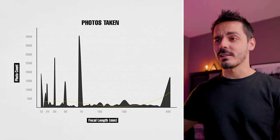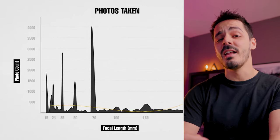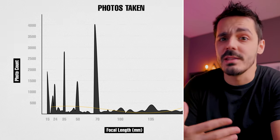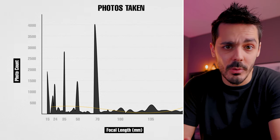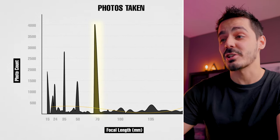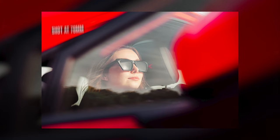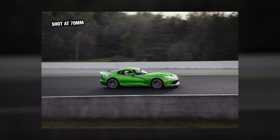Here is what that data looks like. At first I thought 50 millimeters would be my most used focal length, but based on this data, 70 is actually the one I use the most. What this tells me is that right off the bat, if I was to buy a prime lens, I should probably buy a 70mm prime — except 70mm prime lenses don't exist, so I'd have to bump that up to something like an 85mm prime lens.